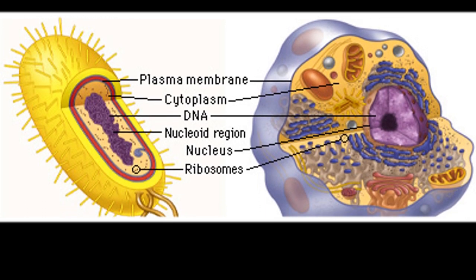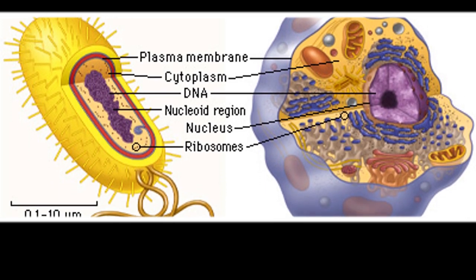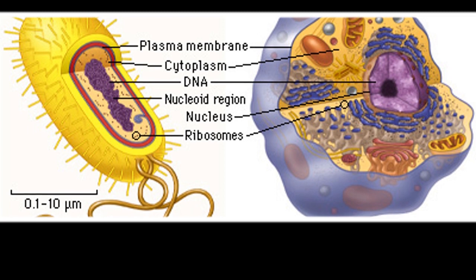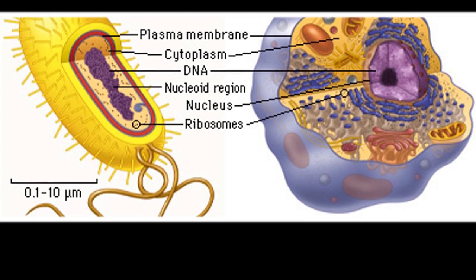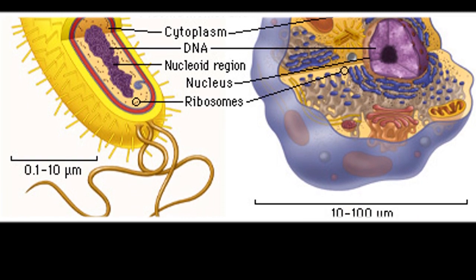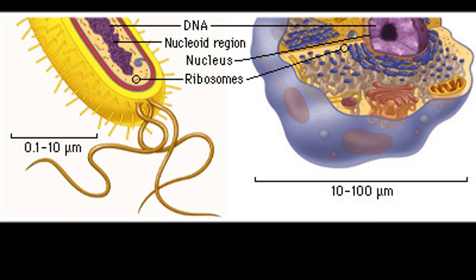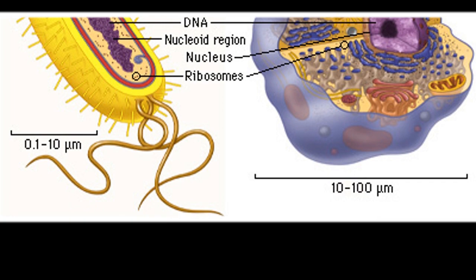We will be talking about cells. There are two types of cells: prokaryotic and eukaryotic. We will be listing the main parts of a cell and its functions.